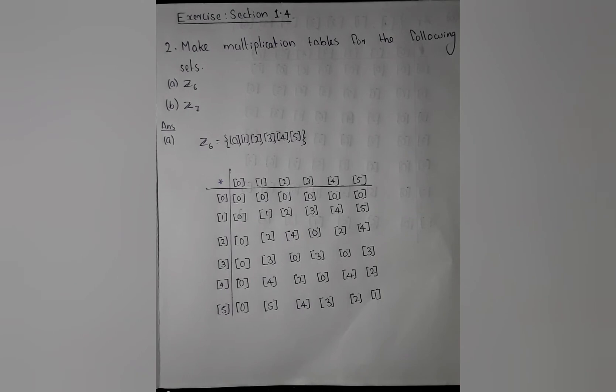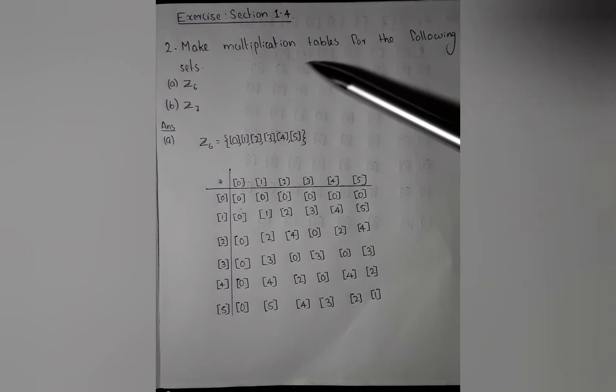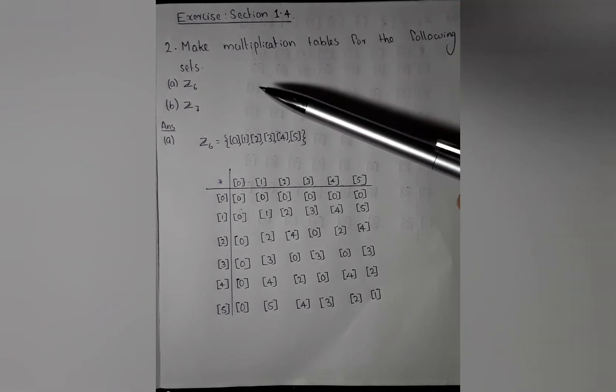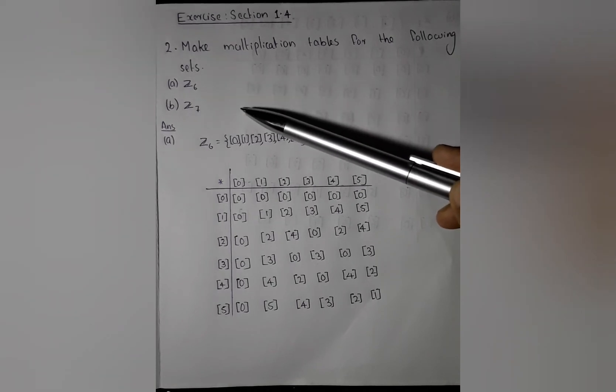Good morning friends. Now I am discussing a question from section 1.4 and the question is make multiplication tables for the following sets. Part A is set 6 and part B is set 7.